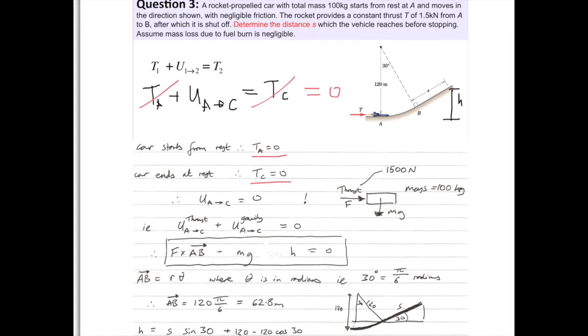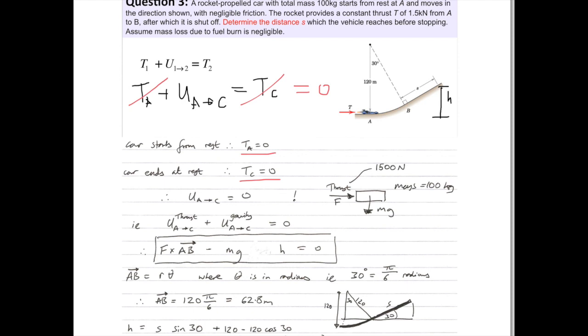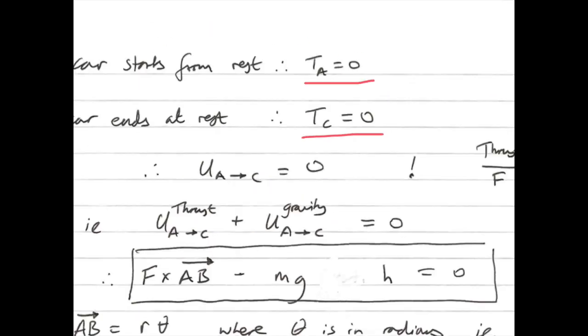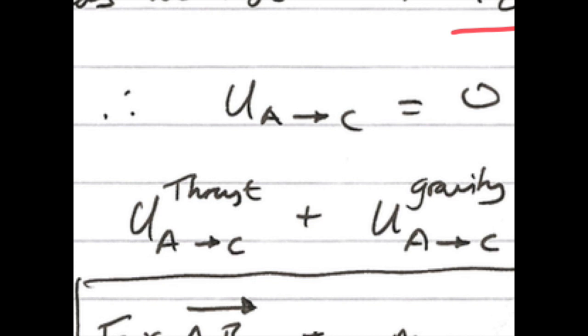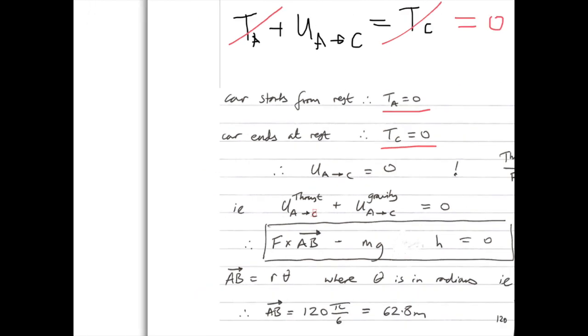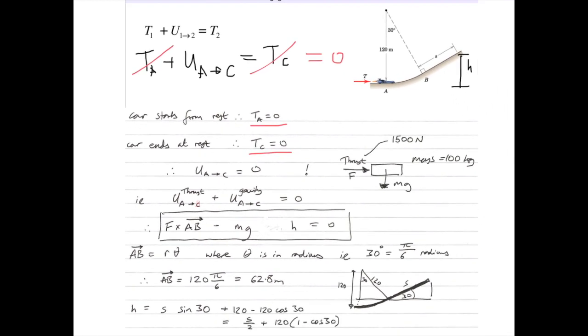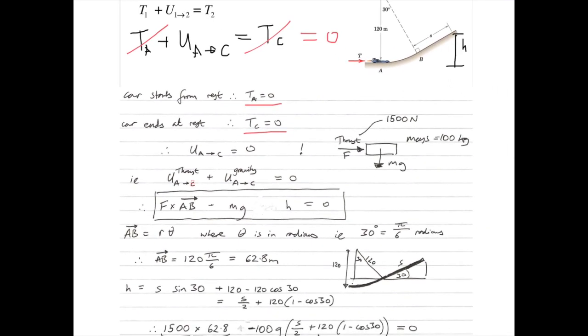You've got two components of work. You've got the thrust which is between A and B. So that should say A to B. And you've got the gravity between A and C because it's all the time changing height between A and C.